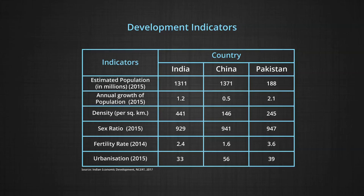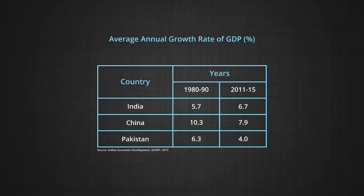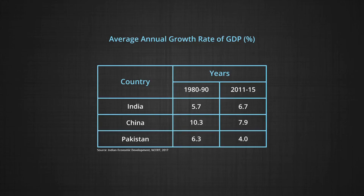Table two gives the average growth rate of GDP in these countries. There has been a remarkable increase in the growth rate of India, while China and Pakistan show a decrease during the period 1980-90 to 2011-15. It can also be noted that during the 1980s and 90s, China had a double digit growth rate ahead of India and Pakistan, which shows a substantial decline during 2011 to 2015.